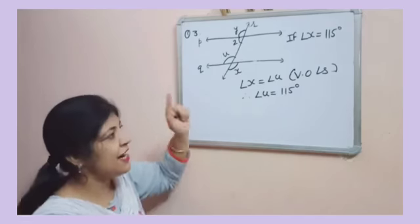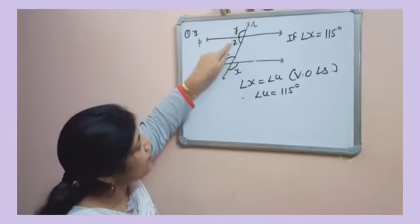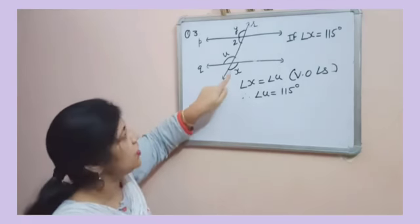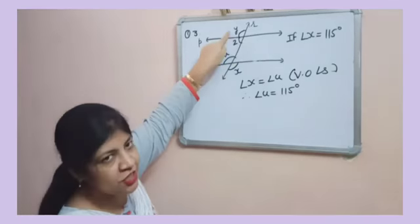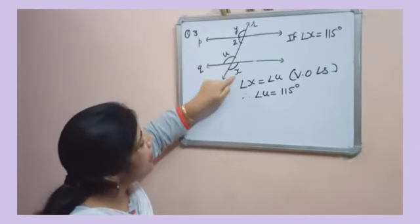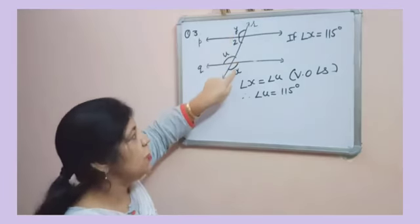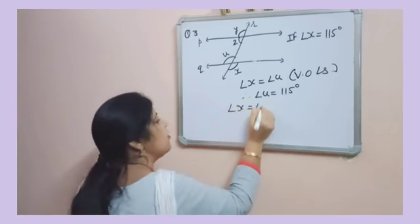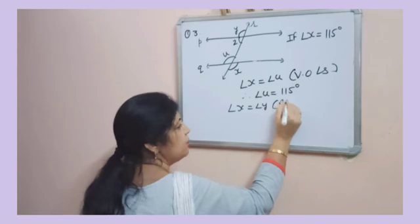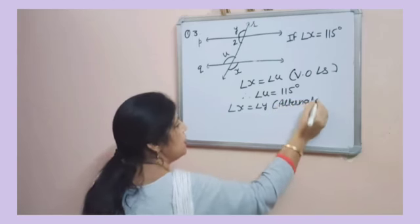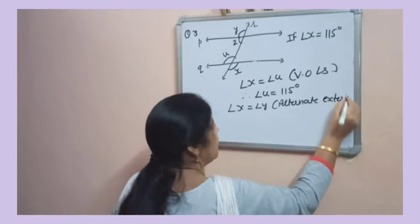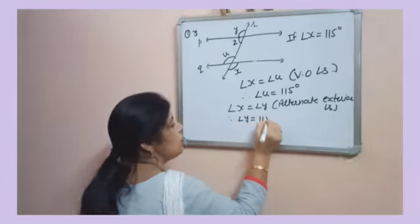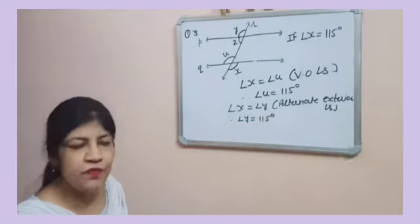Yes, there is a direct relationship between X and Y. They are alternate exterior, on opposite sides of the transversal and exterior as well. So angle X will be equal to angle Y. Reason? Alternate exterior angles. Therefore, Y will also be equal to 115 degrees.